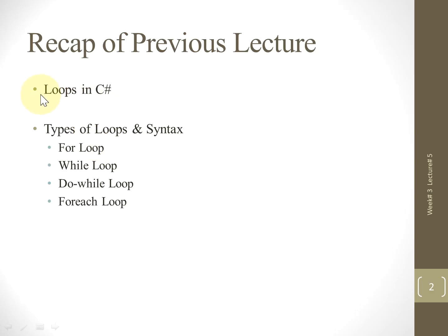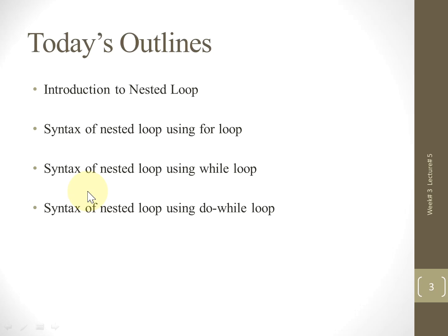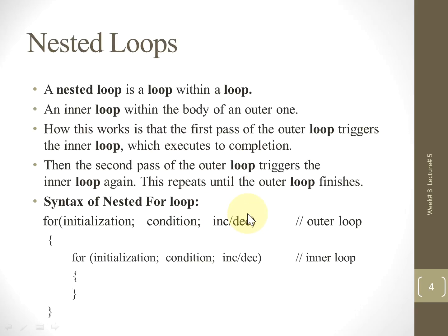In our previous lecture we learned few topics, the main topic being loops in C# — how they are implemented within C#. We learned the types of loops: the syntax of for loop, while loop, do-while loop, and at the end, for-each loop.